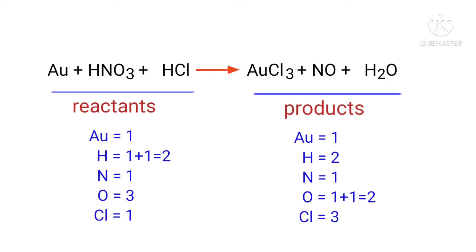And on the products side there are 1 gold atom, 2 hydrogen atoms, 1 nitrogen atom, 2 oxygen atoms, and 3 chlorine atoms present.